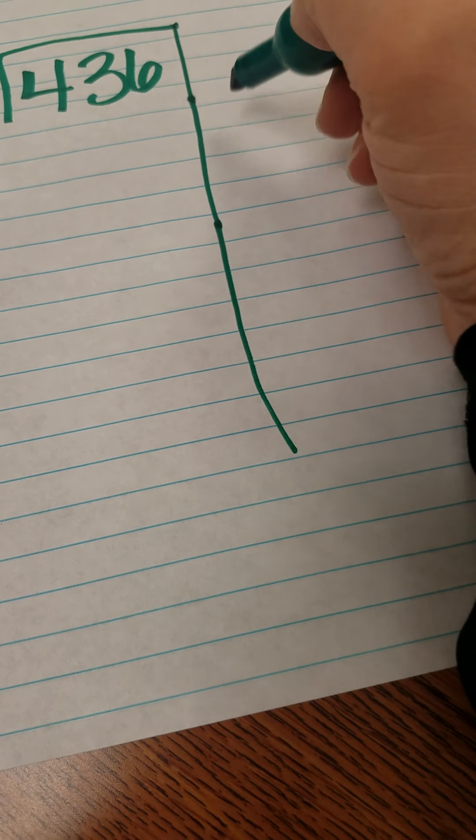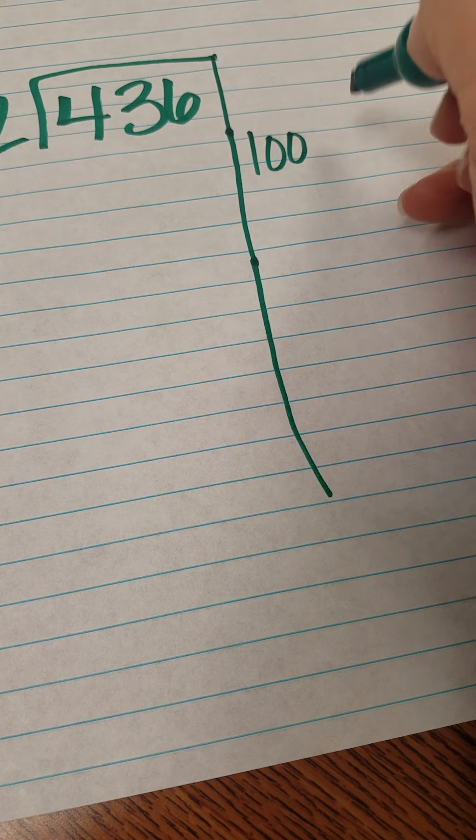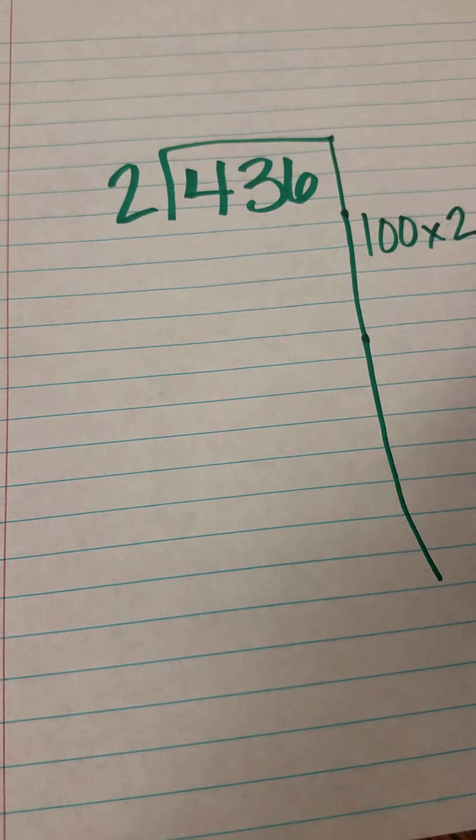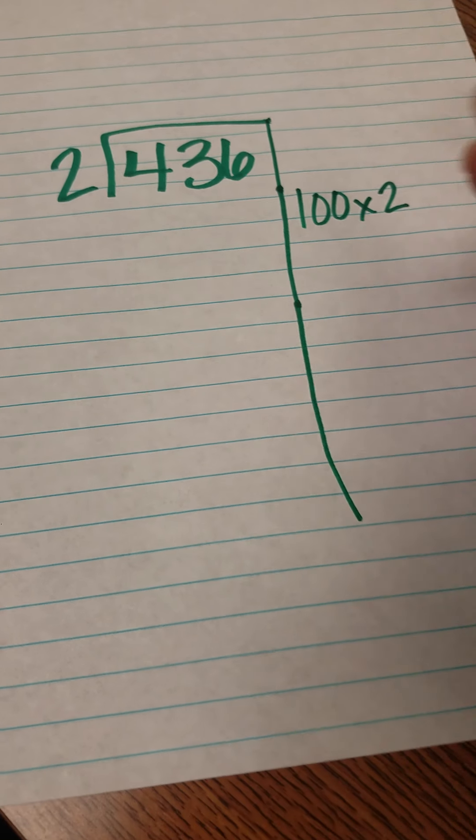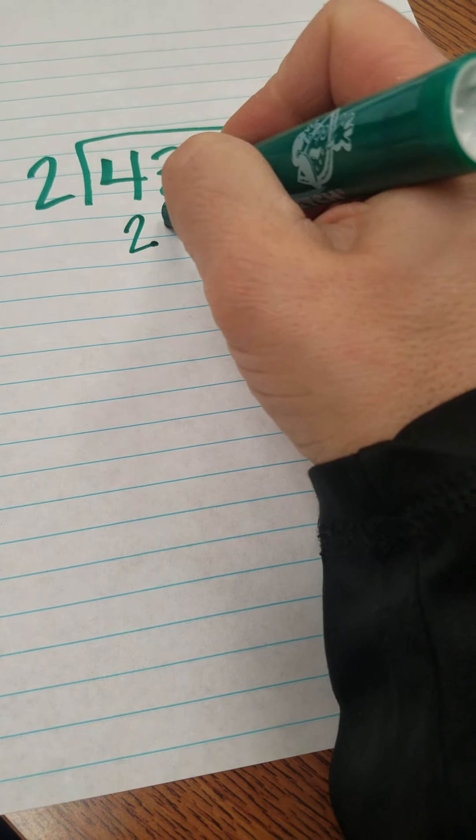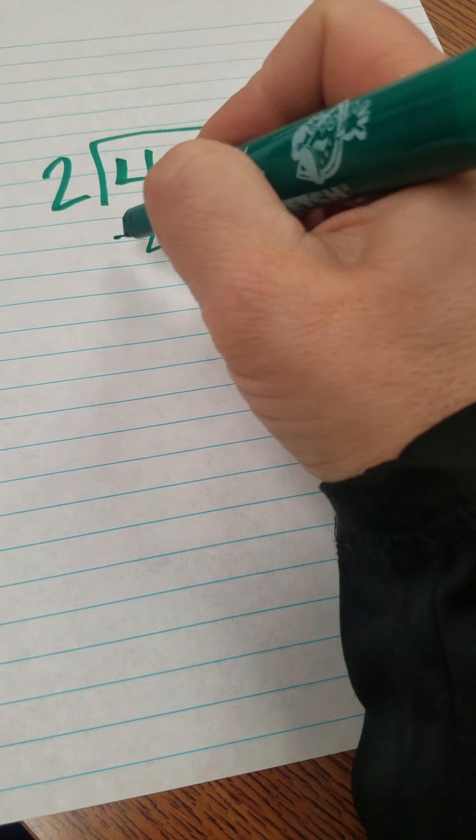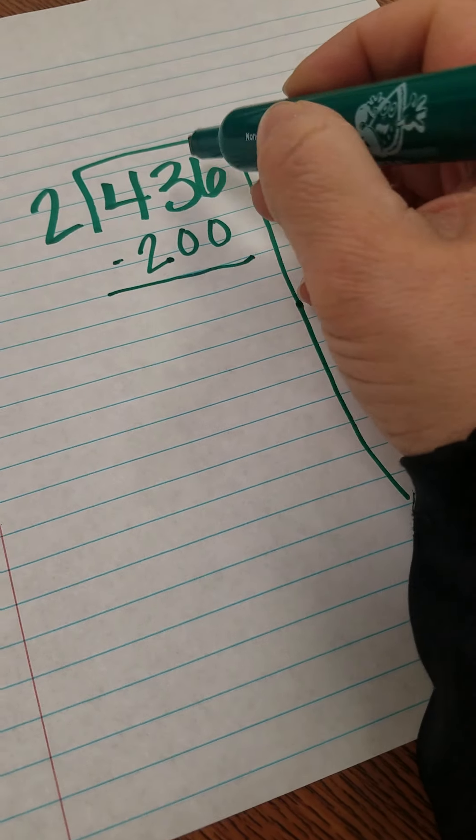So over here I'm going to say yes there are a hundred, so I'm going to do 100 times 2. 100 times 2 is 200, so you're just pulling them out, you're just taking out that amount and what we have left over is 236.